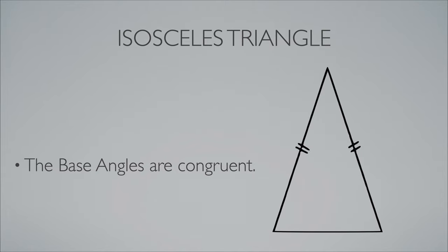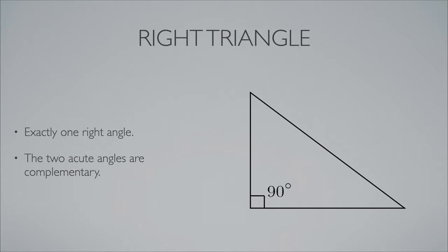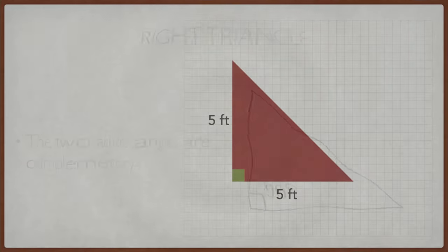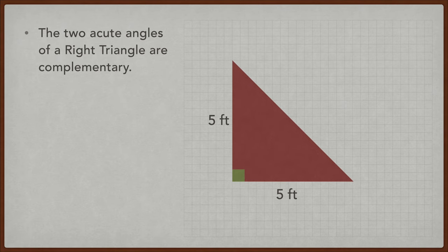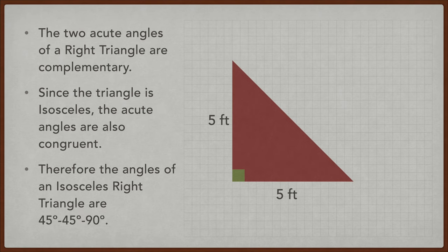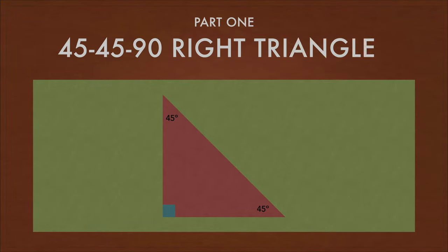Now, not only that, but it's a right triangle. And what do I know about a right triangle? Well, the two angles are complementary, which means that they add up to be 90. So in this case, the two acute angles of a right triangle are complementary, and the acute angles are also congruent. Therefore, the angles of an isosceles right triangle are 45, 45, 90. Which brings us to part one, 45-45-90 right triangles.